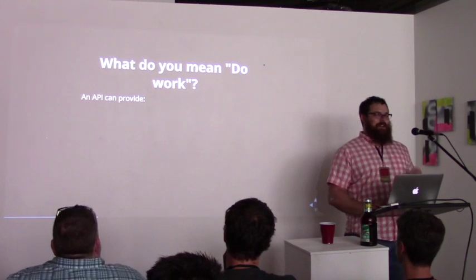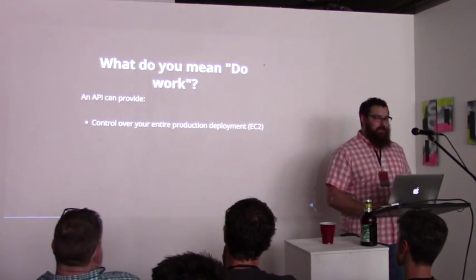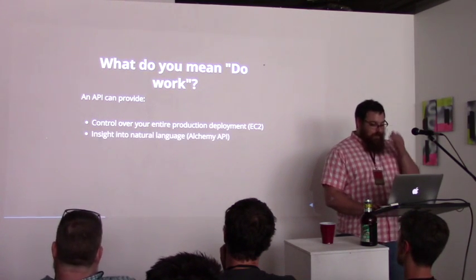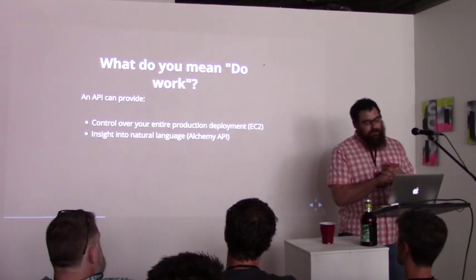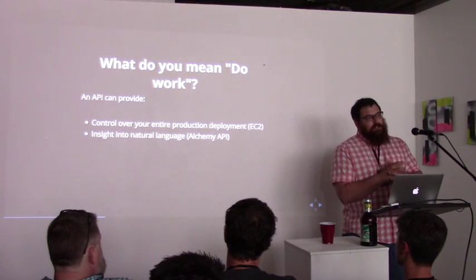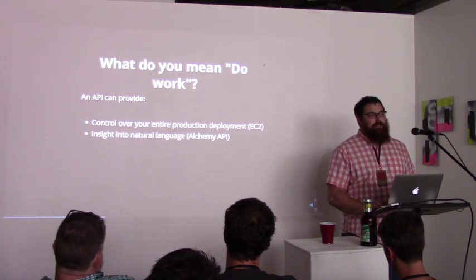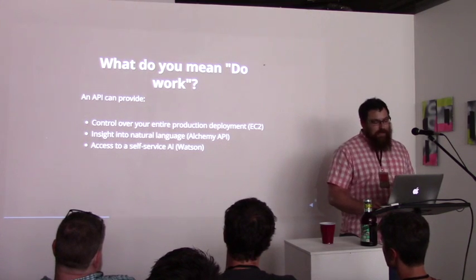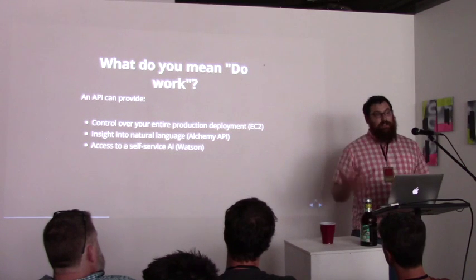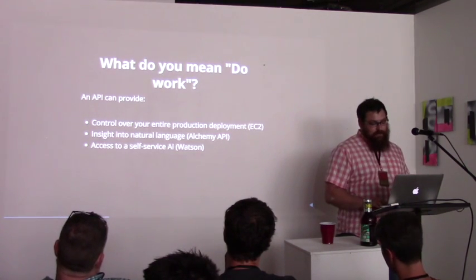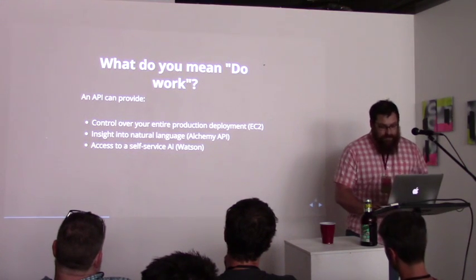So what real kinds of work can an API do? You can control your entire production deployment via EC2, for example. You can get insight into natural language — there's a company downtown here called Alchemy that just recently got acquired by IBM to integrate with Watson. Speaking of Watson, you can actually access the Watson computing environment via an API. So if you want to answer your own Jeopardy questions, maybe try to beat the computer — it is possible.